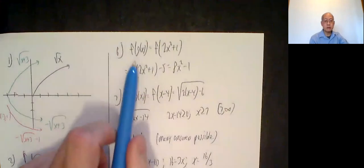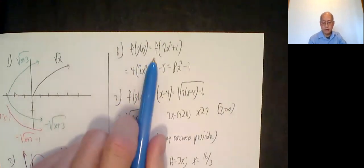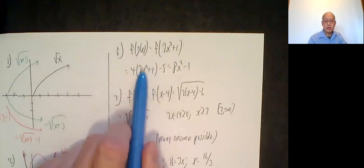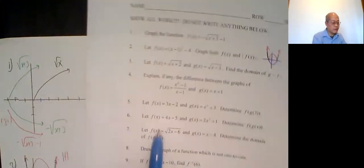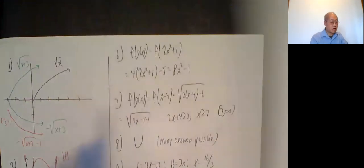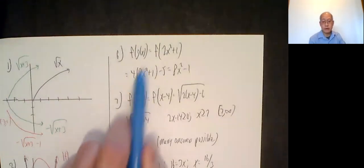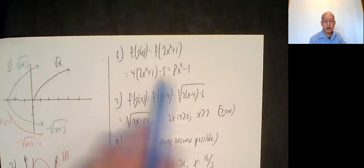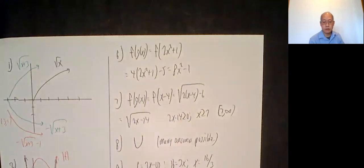6 asks for f of g of x. So that's f of 2x squared plus 1. 2x squared plus 1 goes in place for the function f, which is 4 times whatever you give it minus 5. So 4 times whatever you give it, 2x squared plus 1 minus 5. That's 8x squared plus 4 minus 5, or 8x squared minus 1.